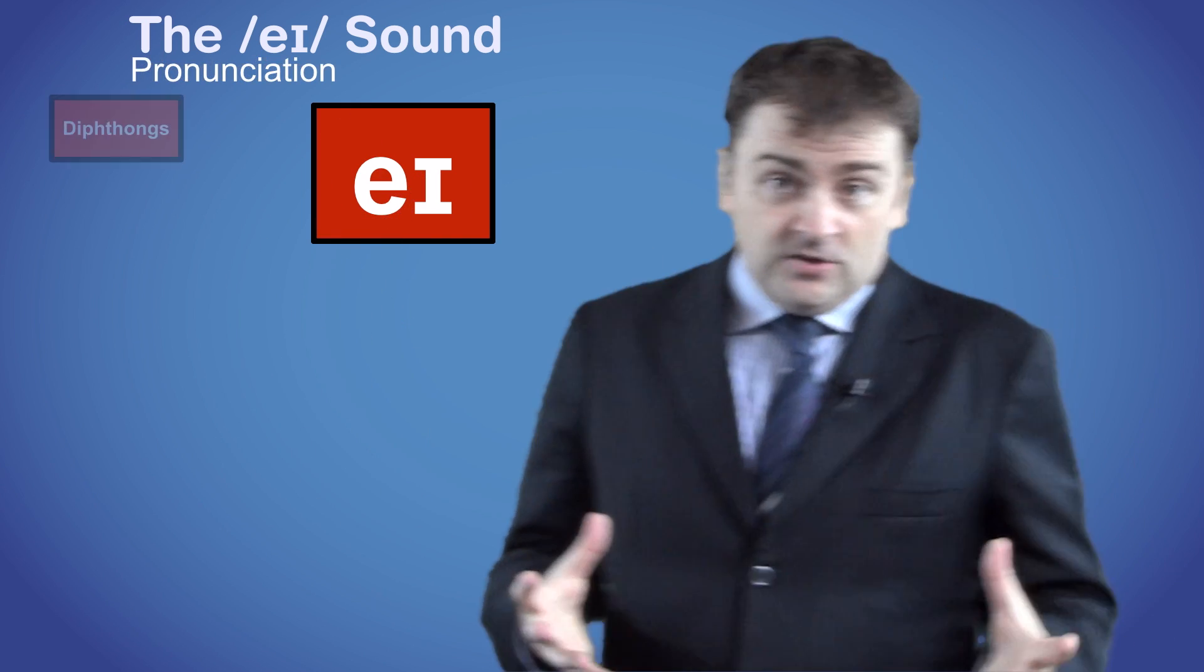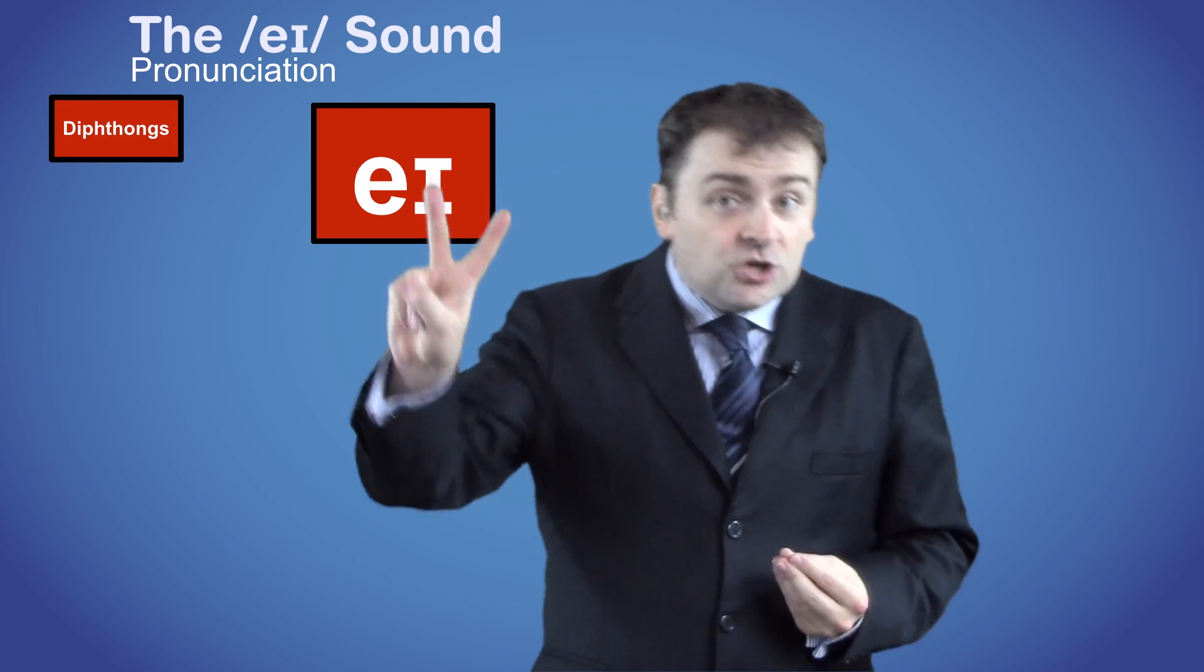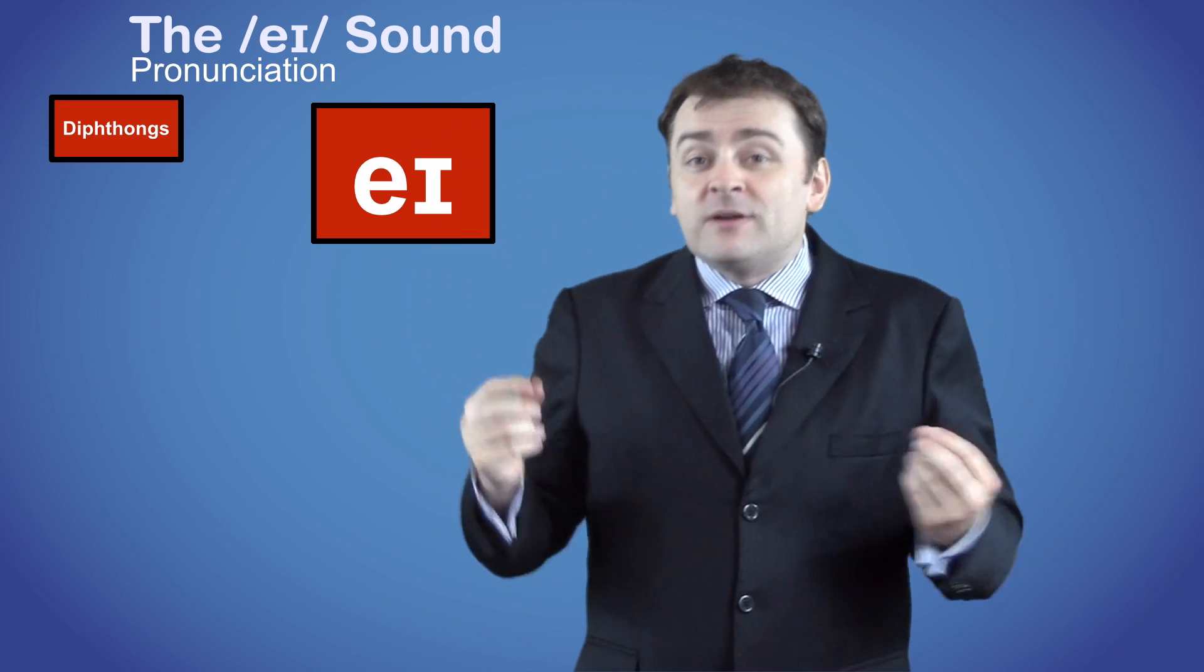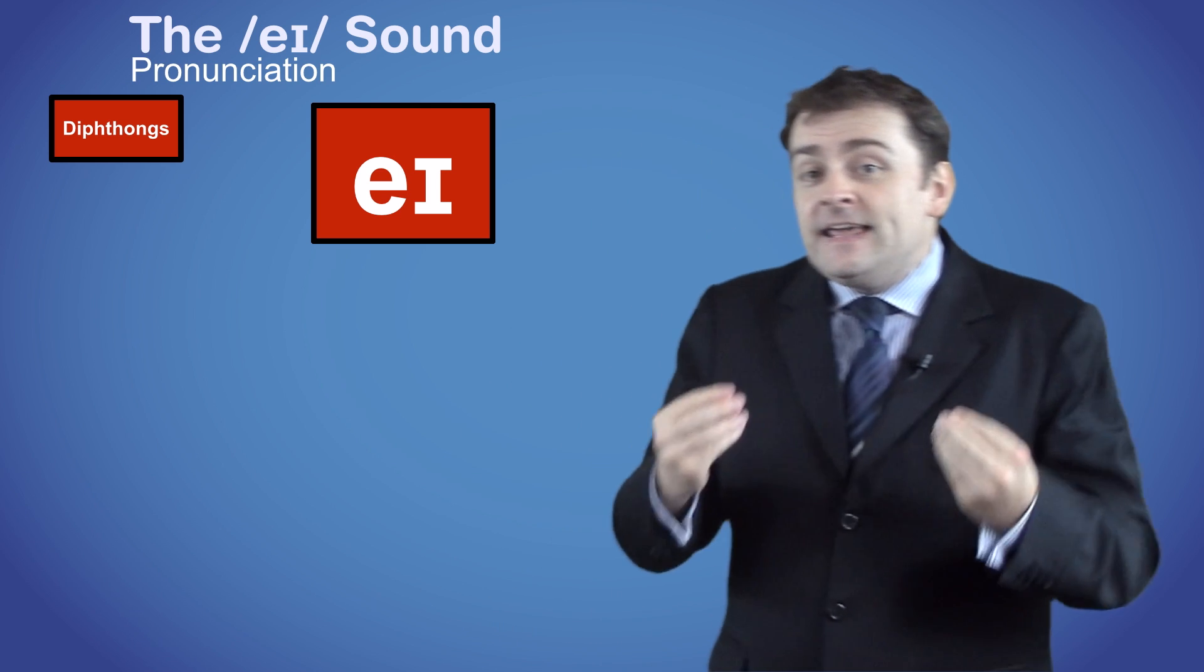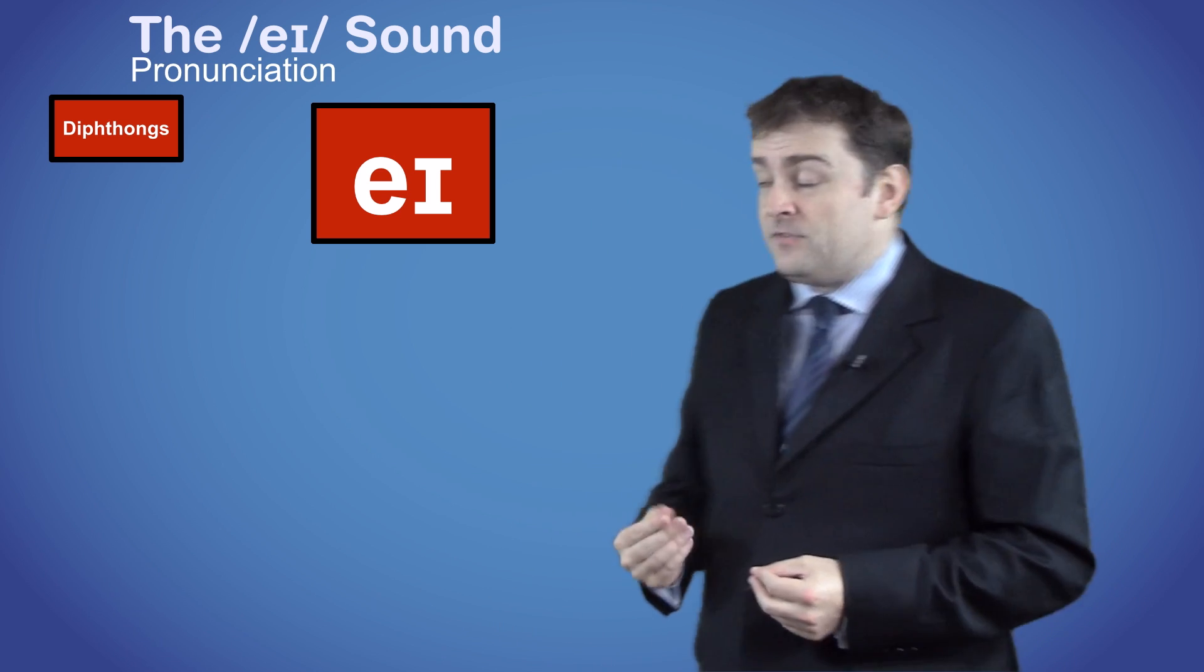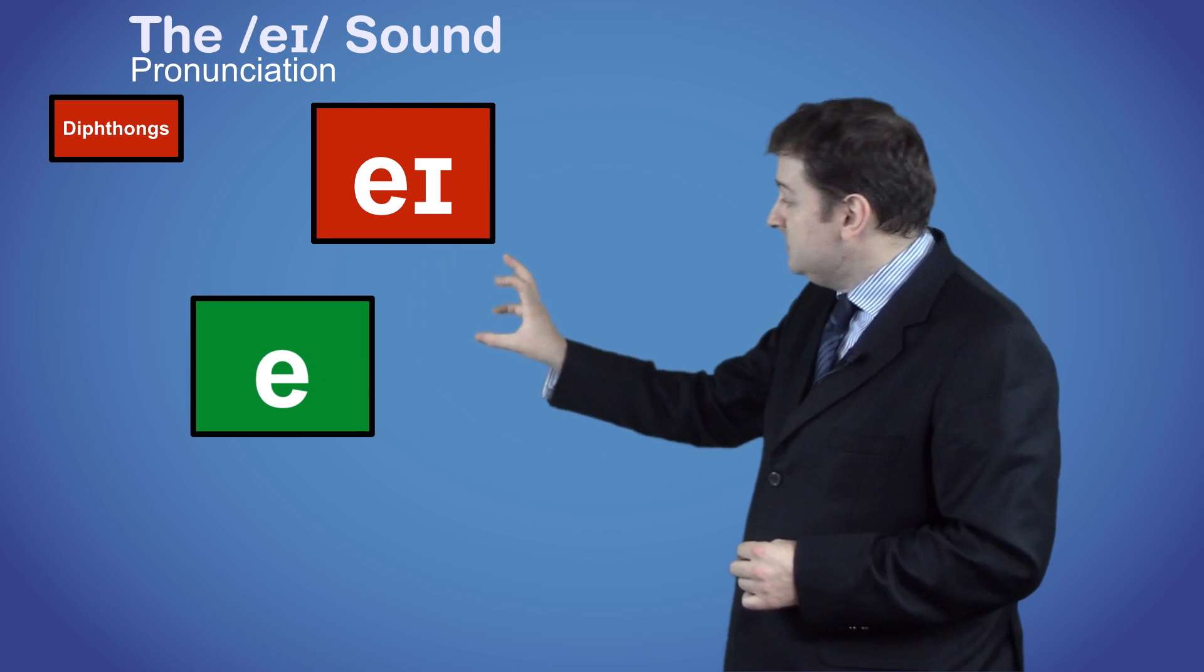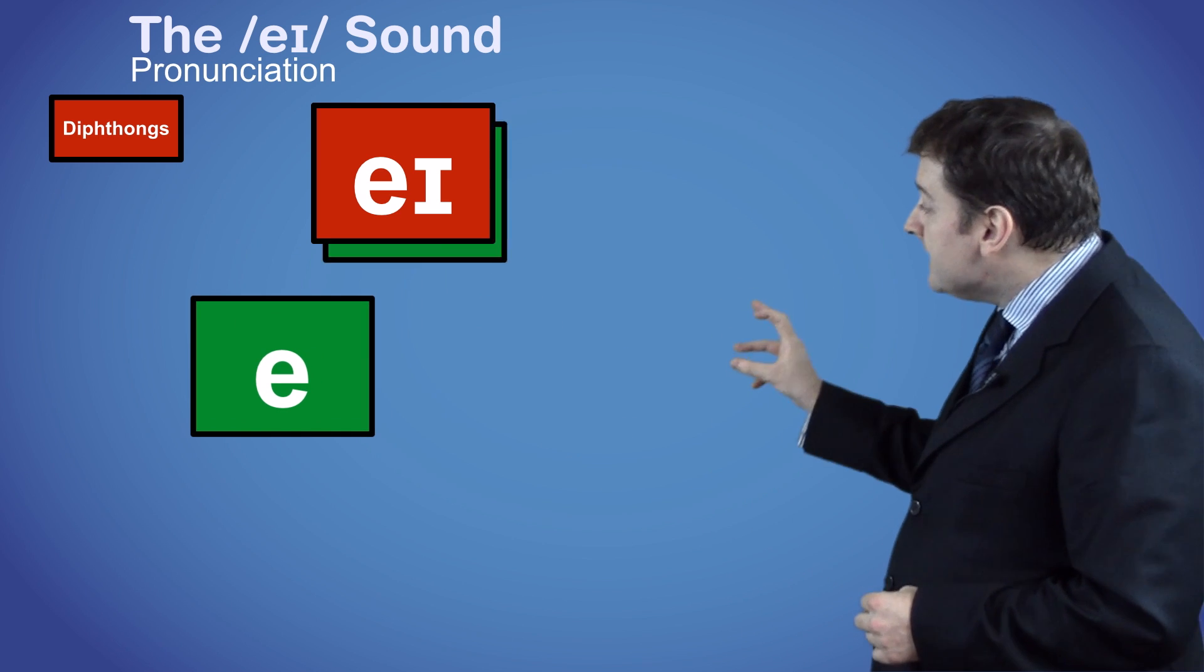EY is a diphthong sound which means it is a combination of two vowel sounds that are pronounced within the same syllable. The EY sound is a combination of the EH sound and the IY sound.